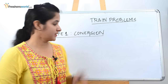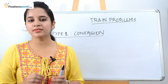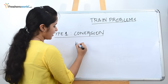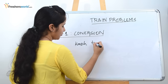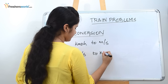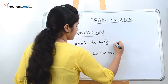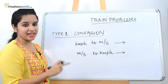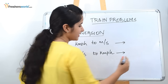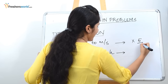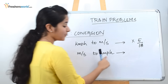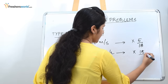Type 1 is conversion — a very simple problem that you may face in any exam. The conversion types are kilometers per hour to meters per second, or meters per second to kilometers per hour. When the question asks you to convert from kilometers per hour to meters per second, always multiply by 5/18. When converting from meters per second to kilometers per hour, multiply by 18/5.